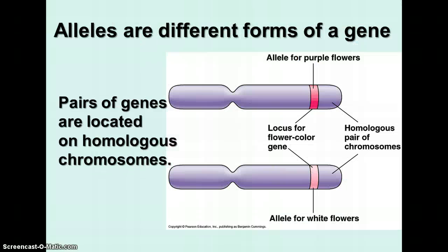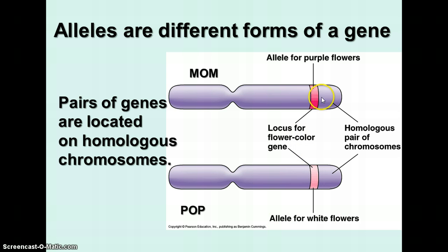What we're talking about is alleles. He didn't call them alleles — that's a term that came up later; he called them factors. But we now call them alleles. Remember that alleles are the different forms of the gene. Pairs of genes are located on the homologous chromosomes, and each embryo gets one copy of the chromosome from the mom and one from the dad. In this case, the mother plant had the allele for purple flowers, and the father plant — the one that produces pollen — had the allele for white flowers. These are homologous chromosomes; they have the genes for the same traits in the same locations.